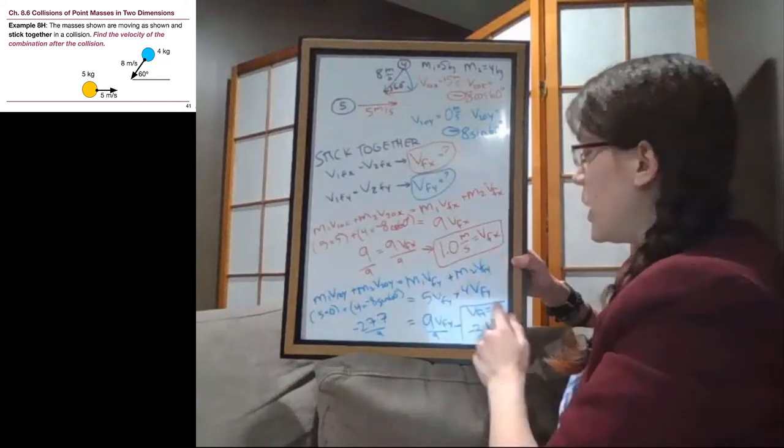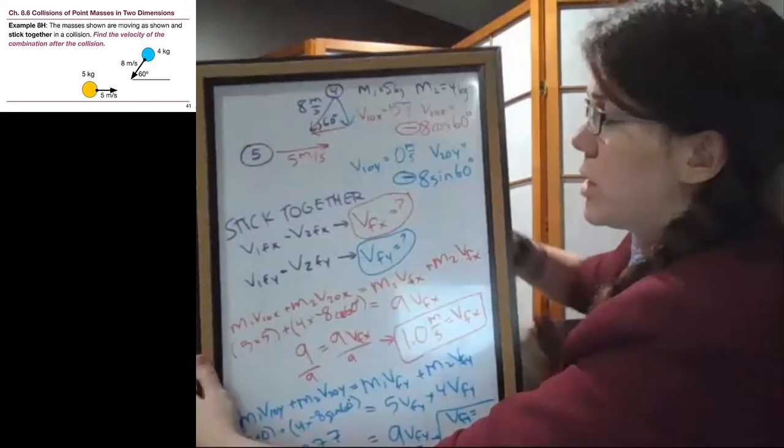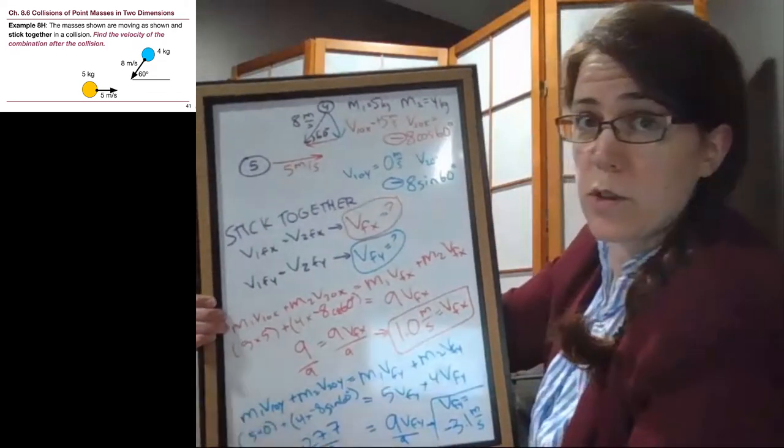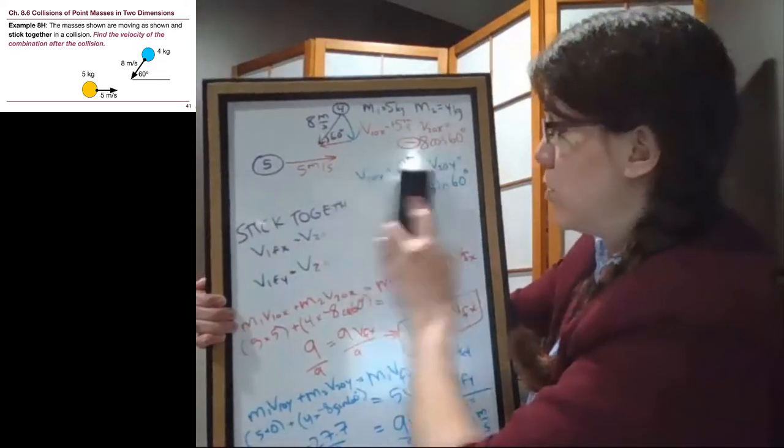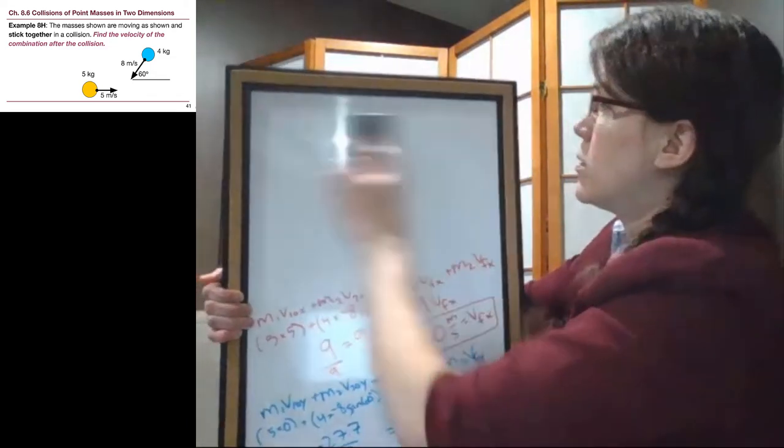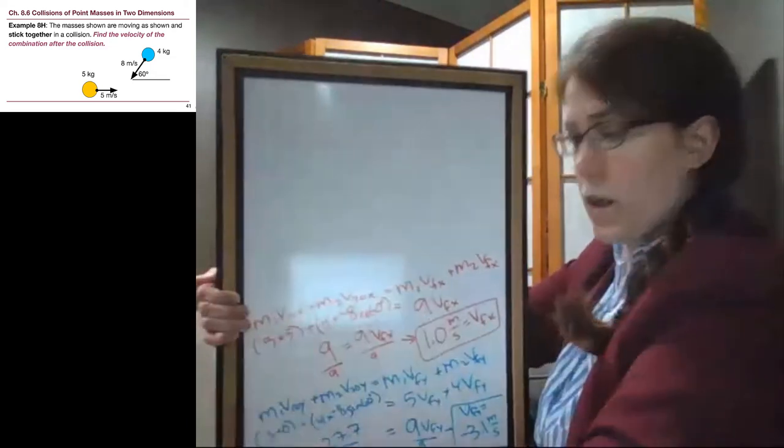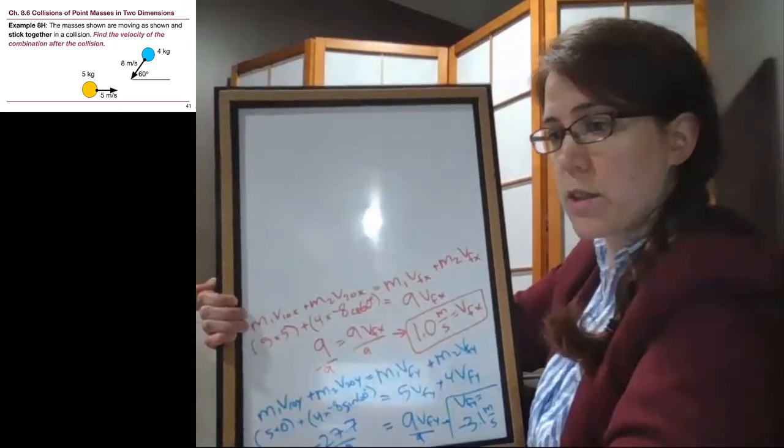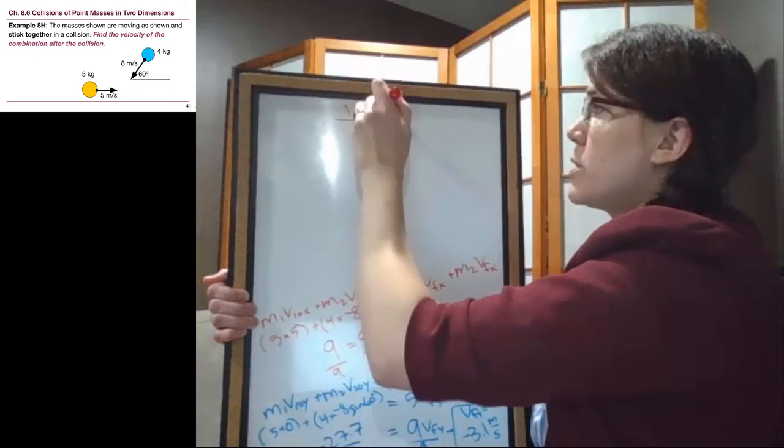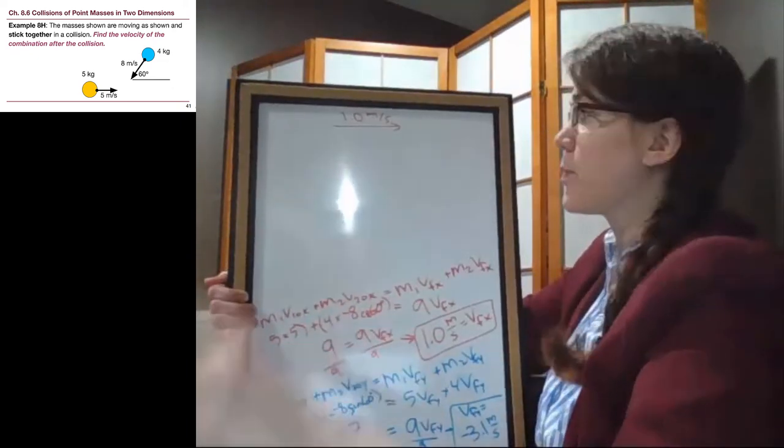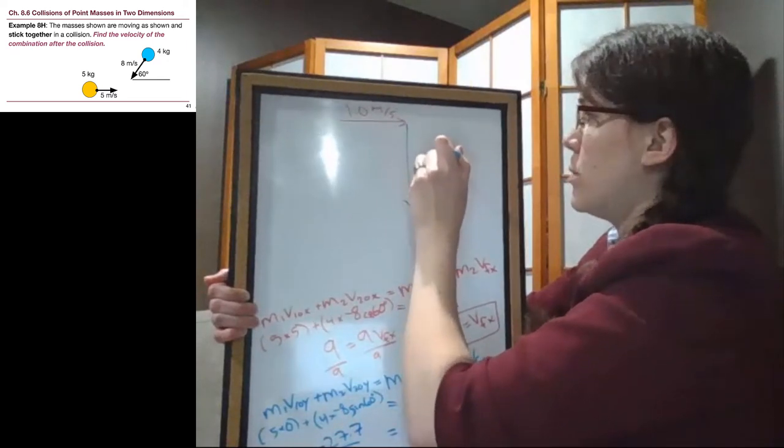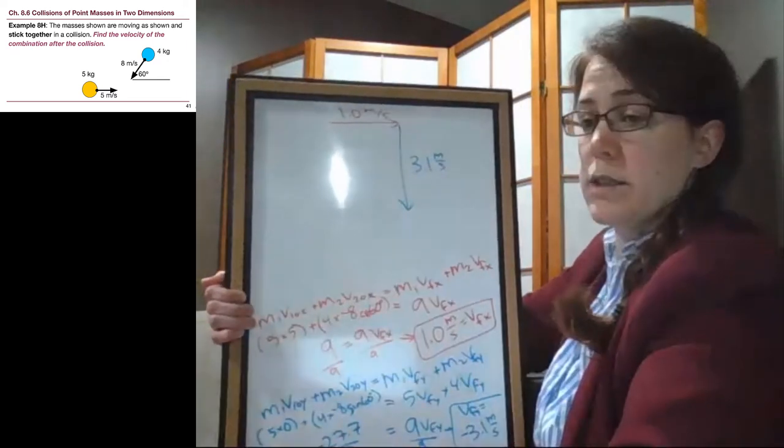So with these two pieces, we have to make a final triangle. So I'm going to erase the setup steps. You can always rewind the video to go back to them if you need them. But just so that we know exactly what this looks like, we have 1.0 meters per second sideways. We have 3.1 meters per second down.